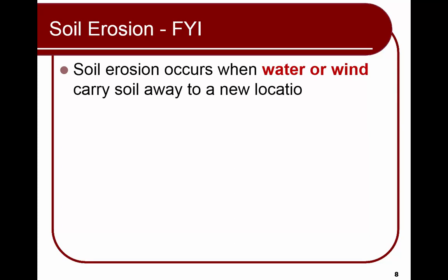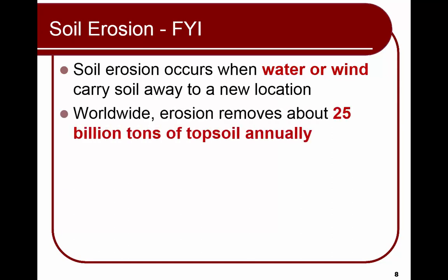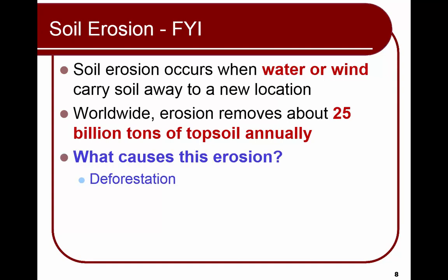Soil erosion happens when wind or water carries soil away to a new place. Worldwide, erosion removes about 25 billion tons of topsoil each year. Causes include deforestation, increasing desertification from overgrazing and overfarming, and poor farming practices.